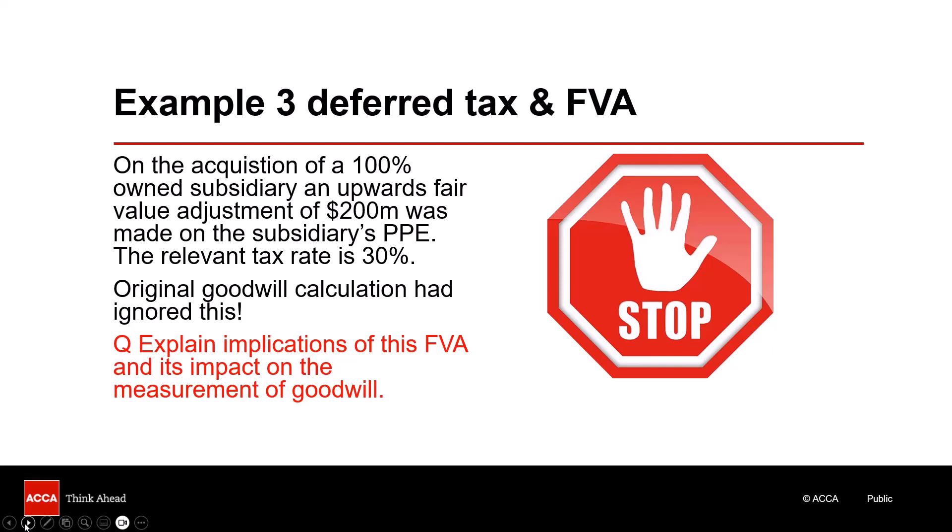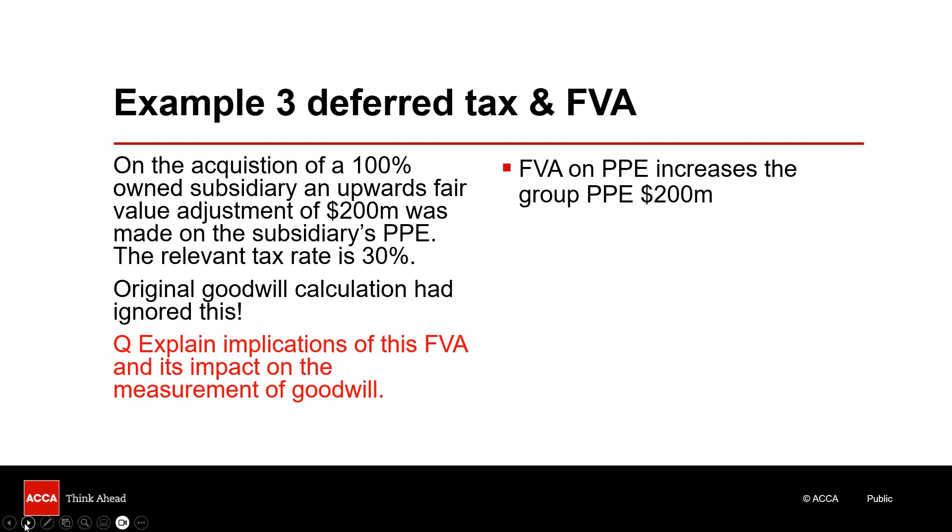There's a lot going on here. We've got a 100% subsidiary, so we won't need to worry about NCI. We've got a fair value adjustment of 200 on the PPE, which increases the group PPE by 200. When the net assets at the date of acquisition are revised upwards, it squeezes the goodwill — goodwill is a balancing figure. By increasing the net assets you're decreasing and reducing the goodwill figure. That's the consequence of the fair value adjustment.